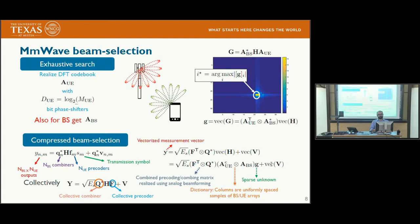In the compressed sensing approach, we use a random precoder matrix F at the transmitter and a random combiner matrix Q at the receiver, using a bunch of random precoders and for each precoder a bunch of random combiners. We vectorize the receive signal into a canonical form involving the precoders, combiner, and vec of the channel. The vec of the channel has a sparse representation G, exploiting the relationship between the channel and G, yielding an underdetermined system in which we reconstruct a sparse unknown.